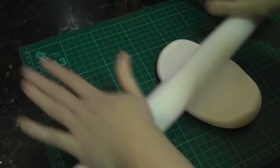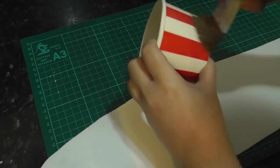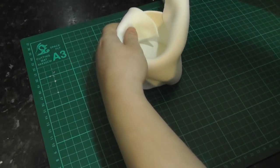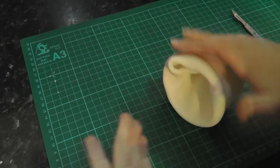Roll out some white paste so it's big enough to wrap around the cup. Brush the cup with piping gel. It won't be as damaging as water to the paper. Wrap the paste around the cup, cutting off the excess with a scalpel. The inside doesn't have to look pretty as it will be covered.